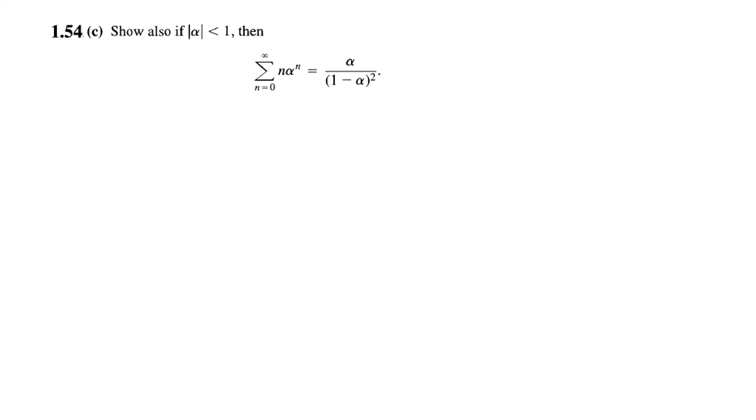Okay, now part C, we have to prove that n*alpha^n is equal to alpha/(1-alpha)^2. So we just saw in part B this formula, so what is the difference? It is just multiplied by n.